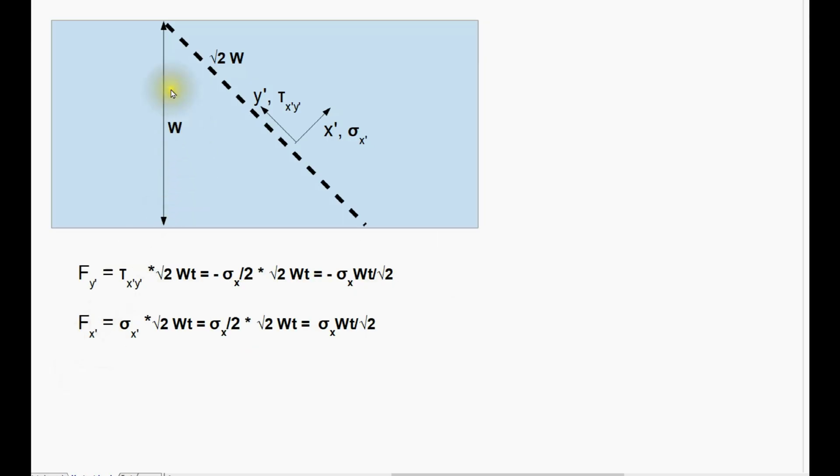I now wish to calculate the forces acting on the plane of the weld. Now if the width of the plate is W, we know that the length of this plane is root 2 times W. If we firstly calculate the forces acting in the Y' direction, it's merely the product of the shear stress, the local shear stress, times the area of this plane.